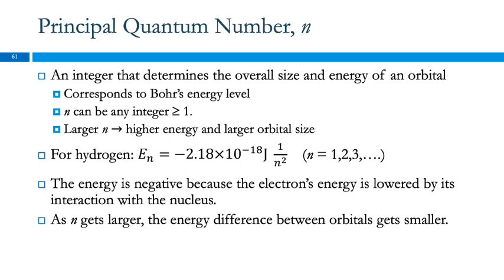An integer is a whole number, a counting number — 1, 2, 3, 4, 5, those sorts of numbers. If n is larger, then the electron has more energy, and the orbital is larger in size.